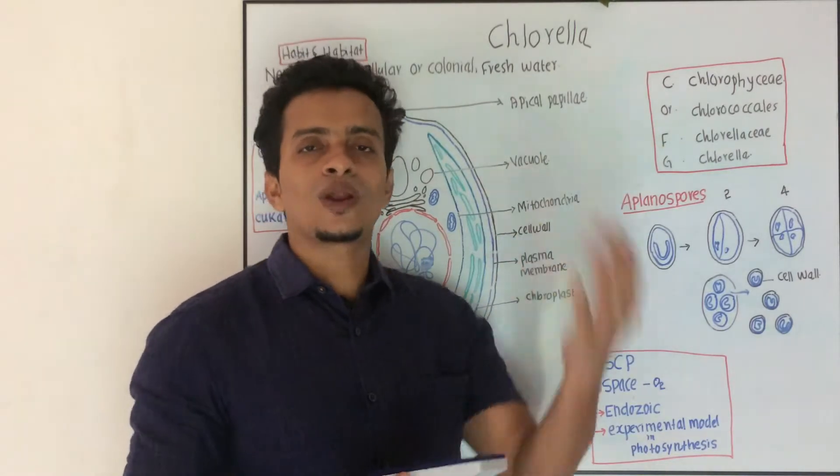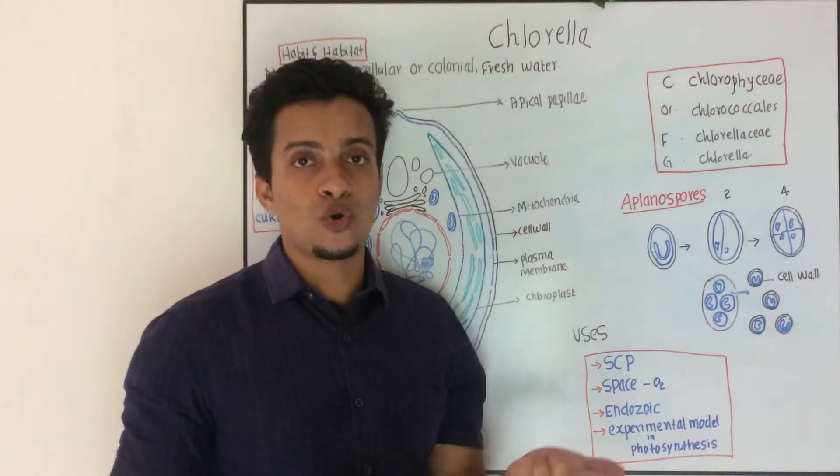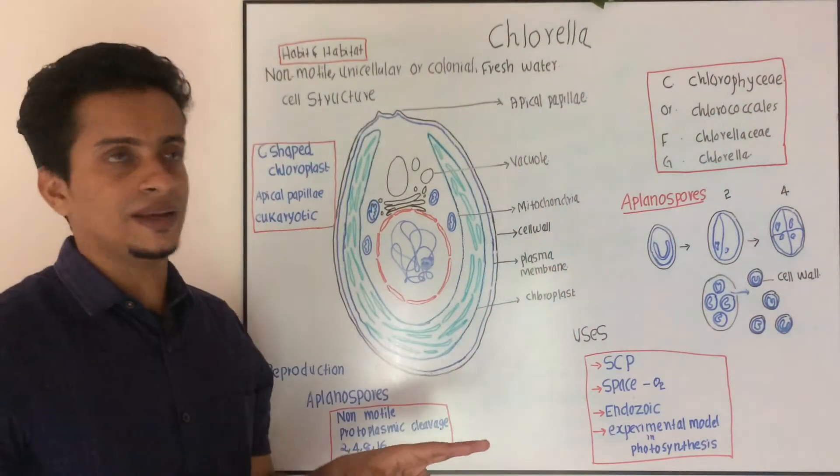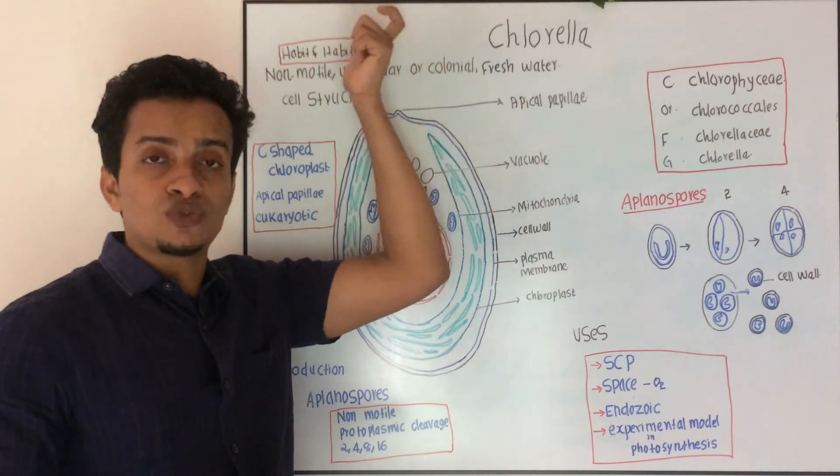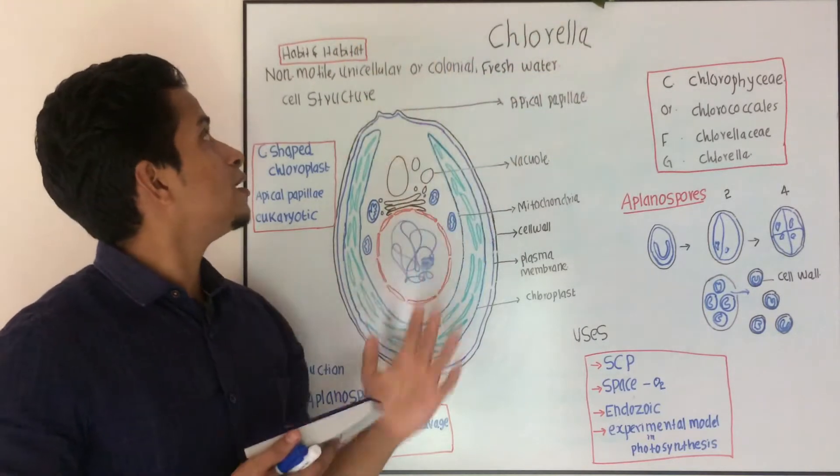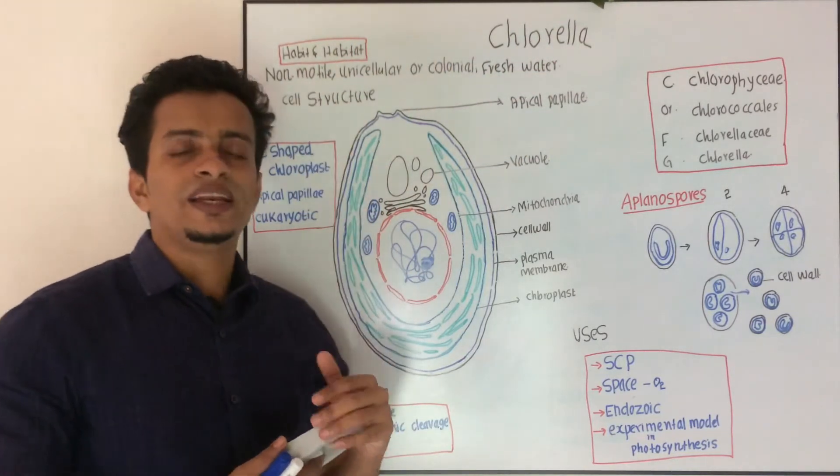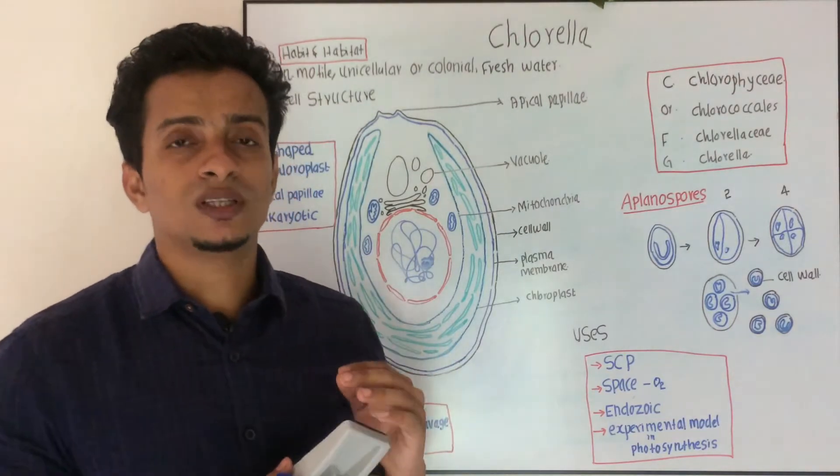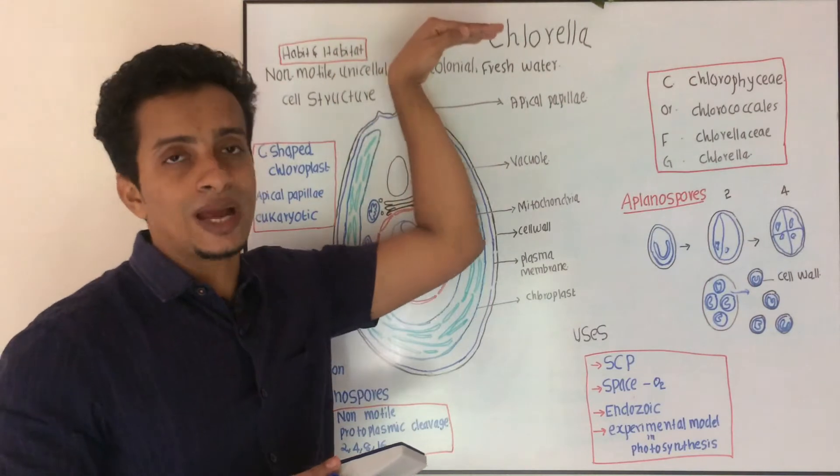Chlorella is a fresh water, unicellular or colonial algae. Green algae is non-motile, fresh water mostly, unicellular or colonial. The next one is the cell structure. First of all, this is the habit and habitat.